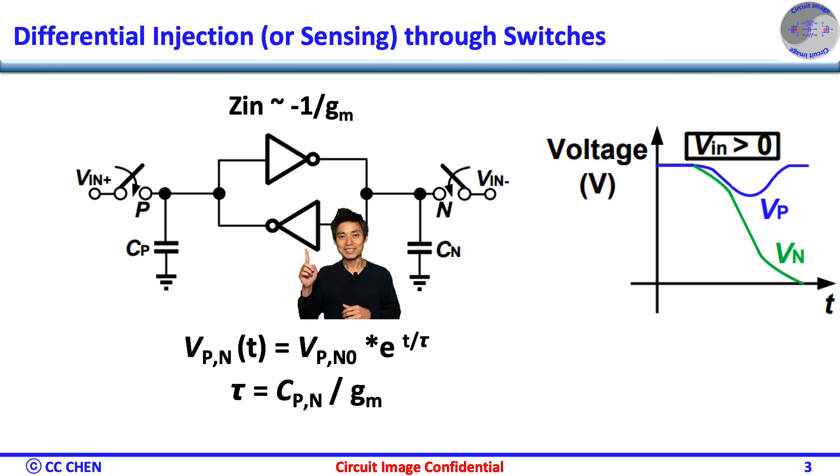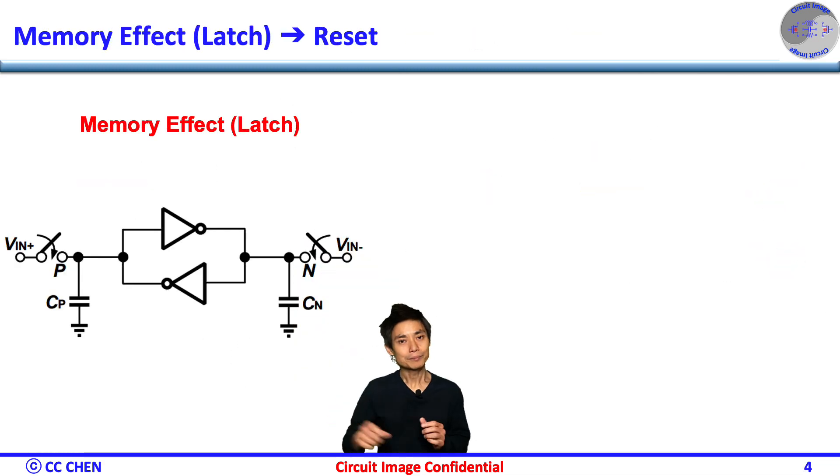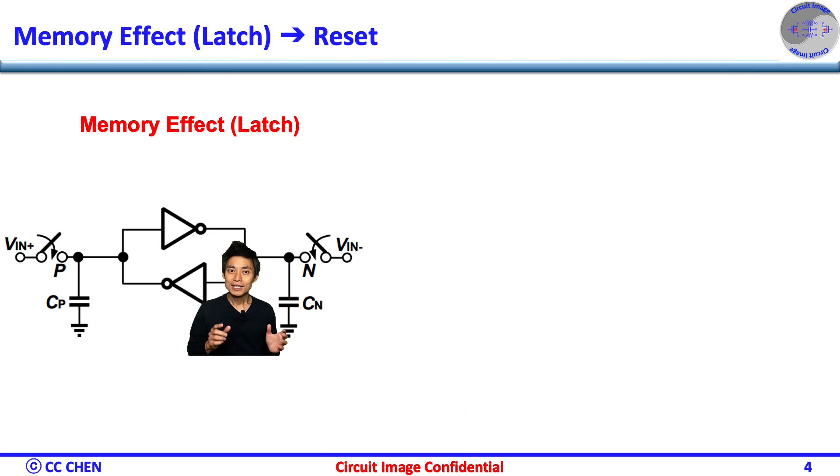Unfortunately, there is one subtlety in the latch here. Think about the memory for 5 seconds. Bingo! The memory effect of the regeneration amplifier will keep on the last result state forever if there is no strong input to flip over the state.